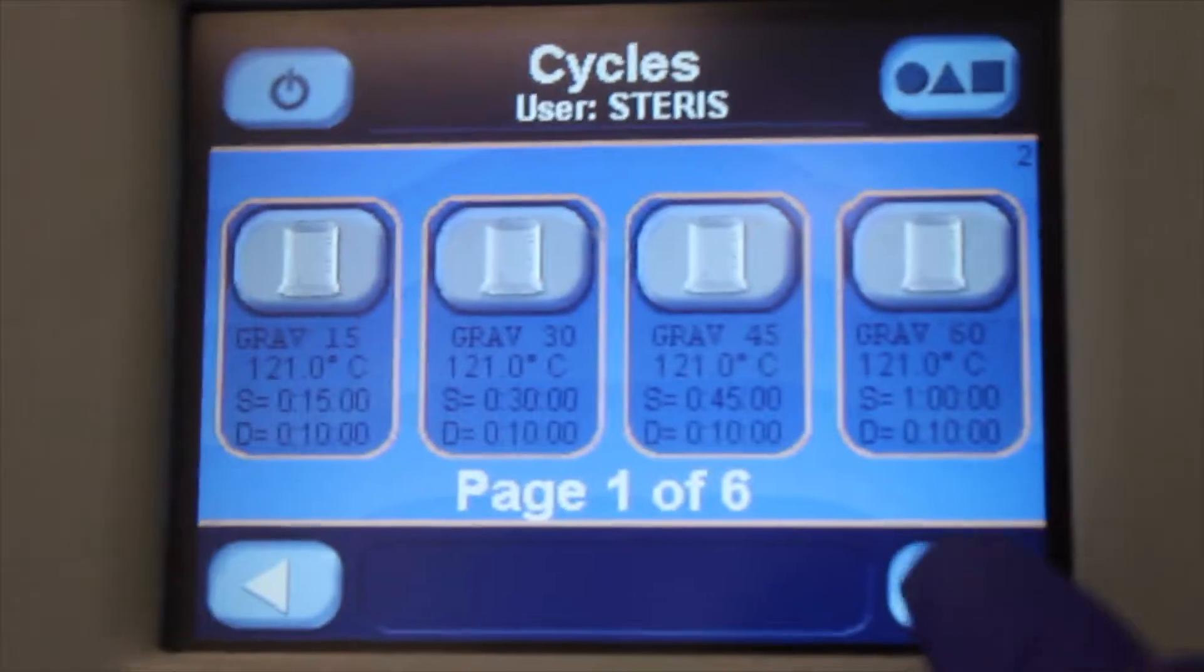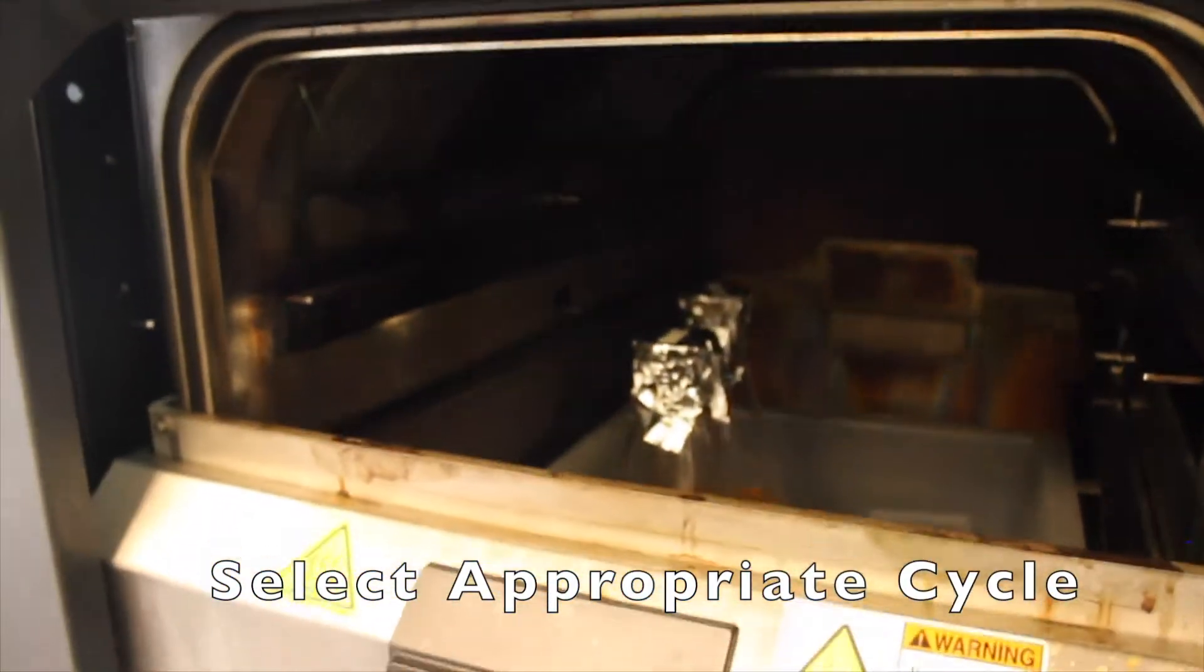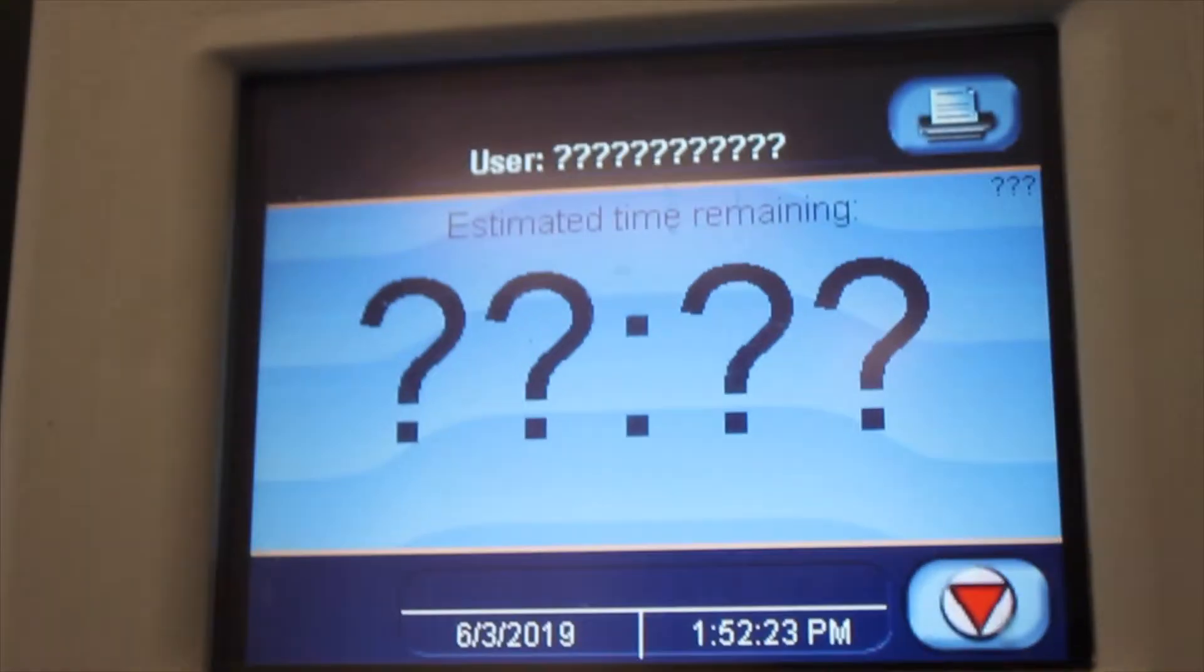Placing the bin in the autoclave and selecting the appropriate cycle, which in this case is liquid 30, we'll start the run.